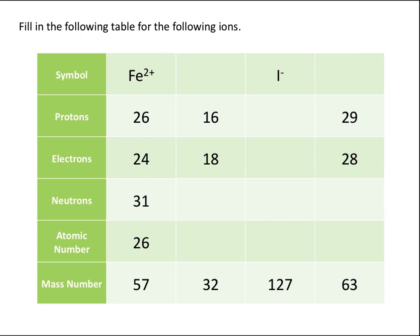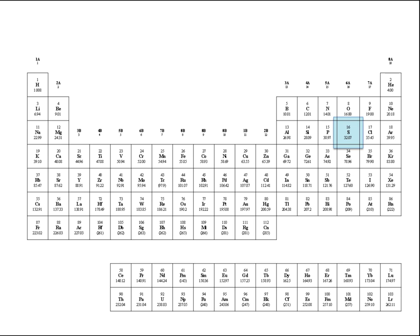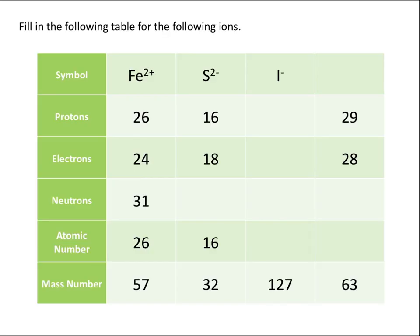Moving to the second column: we have an ion that has 16 protons, so the atomic number is also 16. Because this ion has 16 protons and 18 electrons — 2 extra negative charges — we know this ion must have a charge of minus 2. Looking on the periodic table, the element that always has 16 protons is sulfur, so this must be a sulfur 2− ion. To calculate the number of neutrons, we take the mass number, 32, minus the atomic number, 16, which gives us 16 neutrons.